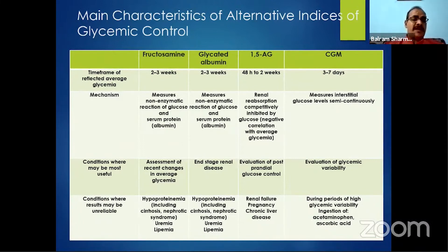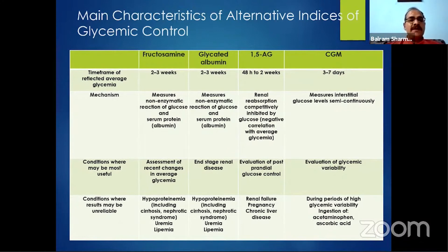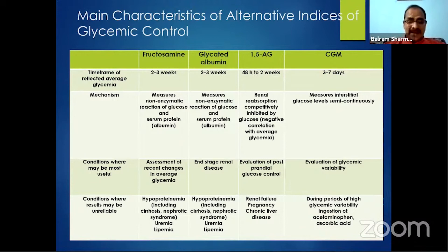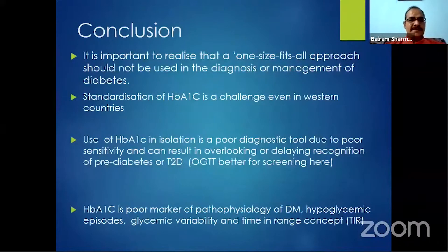Even alternative methods have limitations. Conditions of hypoproteinemia — cirrhosis, nephrotic syndrome — can affect fructosamine and glycated albumin assays. In CKD, 1,5-anhydroglucitol cannot be used. CGMS has a lag due to interstitial delay, and acetaminophen or ascorbic acid may cause interference.